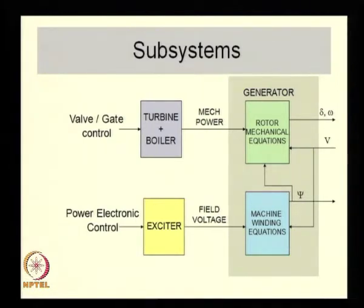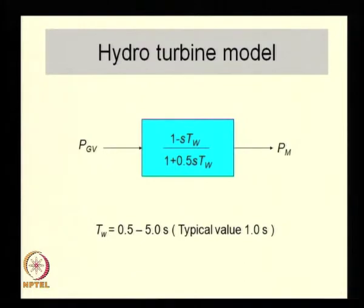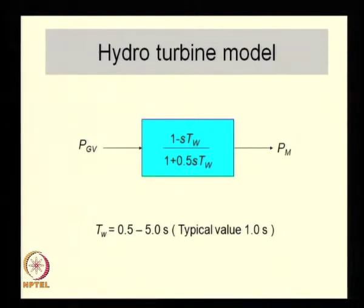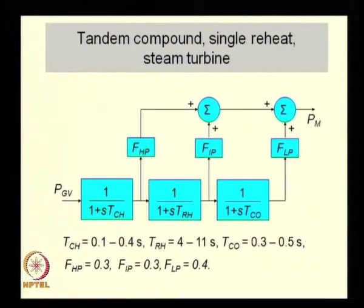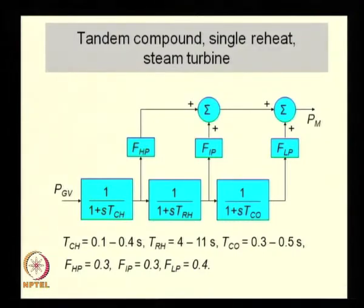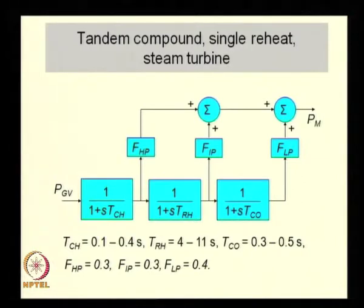In the previous class, we saw models of these turbine systems. One was of a hydro turbine — a very simplified model, suitable only for simple studies. One important point brought out last time was that a hydro turbine model is of non-minimum phase type; it has a zero on the right-hand side of the S-plane. We also saw a steam turbine model — a tandem compound single reheat steam turbine — where each turbine stage (FHP, FIP, FLP) contributes to the mechanical power: the high pressure, intermediate pressure, and low pressure turbines.